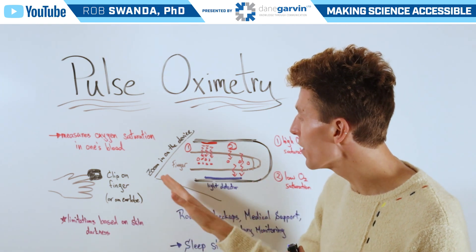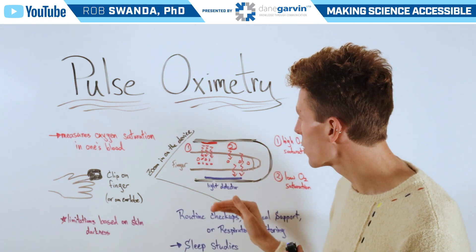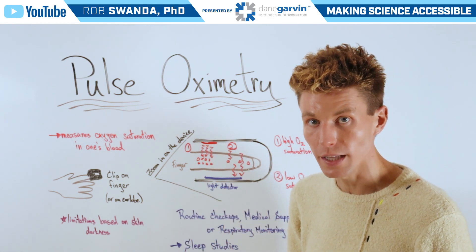If we zoom in on the device itself, it's composed of a light emitter emitting infrared light, as well as a light detector.